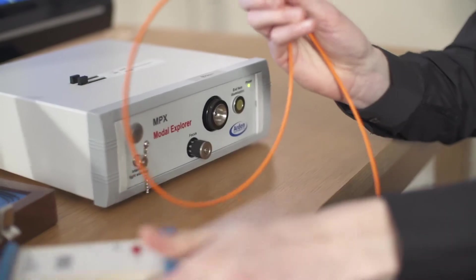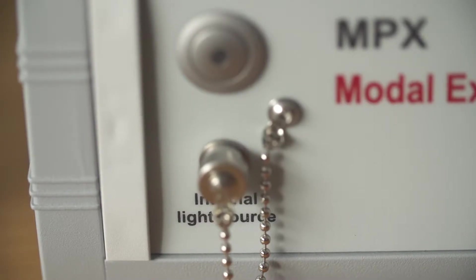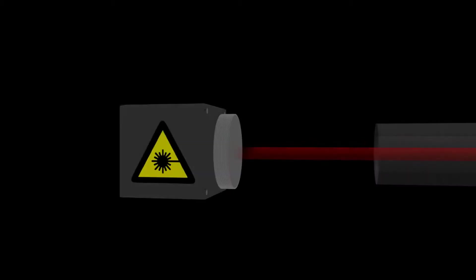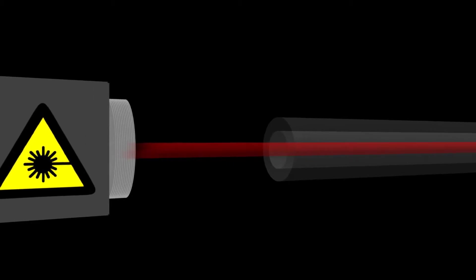The MPX Modal Explorer is the encircled flux meter of choice for leading companies around the world. Encircled flux is a measurement used to describe the amount of modal filling in a multi-mode optical fiber.